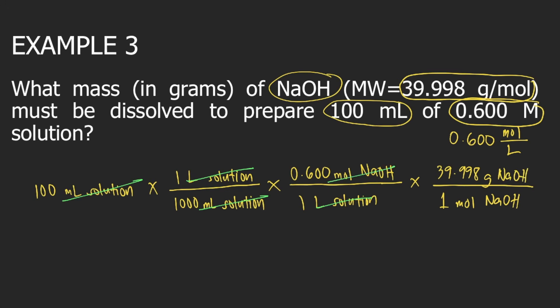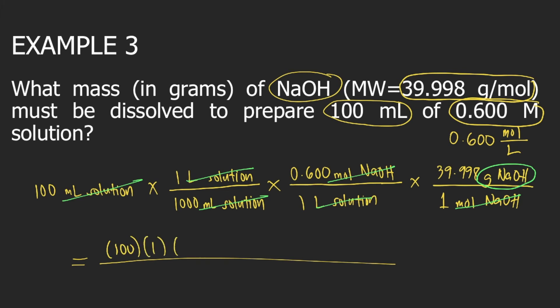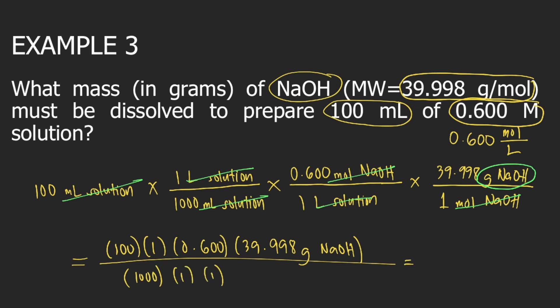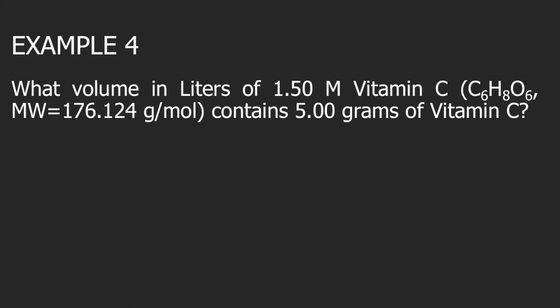Moles of NaOH cancel, and the final unit is grams of NaOH. On top we have 100 times 1 times 0.600 times 39.998 grams of NaOH, and on the bottom we have 1,000 times 1 times 1. Solving this gives 2.4 grams of NaOH, and this is the answer to the question.